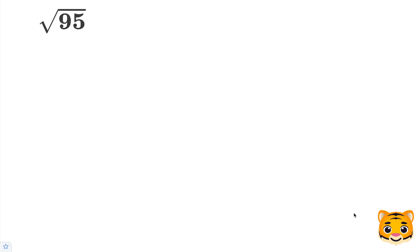In this example, we will be estimating the square root of 95 to the nearest tenth place value. To do this, we need to look at perfect squares nearby to 95.